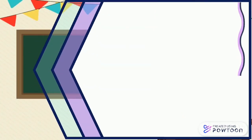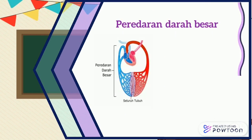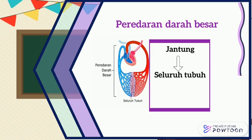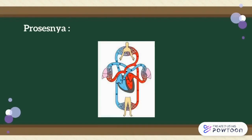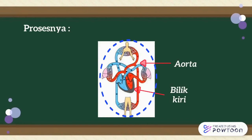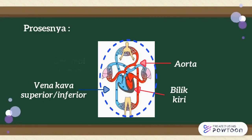Setelah melewati peredaran darah kecil, selanjutnya masuk ke peredaran darah besar. Aliran darah pada peredaran darah besar dimulai dari jantung ke seluruh tubuh dan kembali lagi ke jantung. Aliran darah besar dimulai dari bilik kiri menuju aorta kemudian ke seluruh tubuh, selanjutnya ke vena kafa superior dan inferior yang kaya akan karbon dioksida, dan berakhir di serambi kanan.